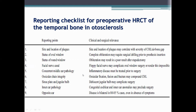Similarly, concurrent middle ear pathology and inflammatory disease must be treated prior to surgery. Ossicular fixation or fracture may complement the conductive hearing loss in case of otosclerosis. Likewise, we have to look at the sigmoid sinus plate and the jugular bulb, because a dehiscent jugular bulb may complicate the surgery. By looking at the CT scan, we also have to assess inner ear pathology, because congenital cochlear inner ear pathologies may preclude surgery. We also have to look at the opposite ear in the CT scan, as otosclerosis is bilateral in 80 to 85% of cases even in the absence of symptoms.